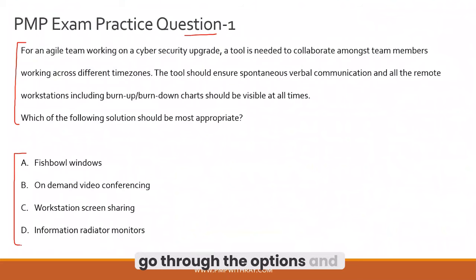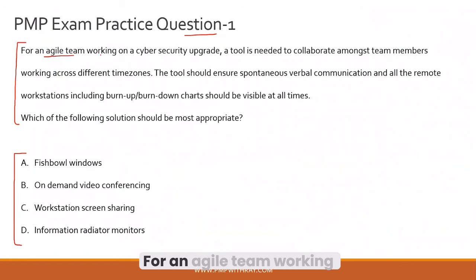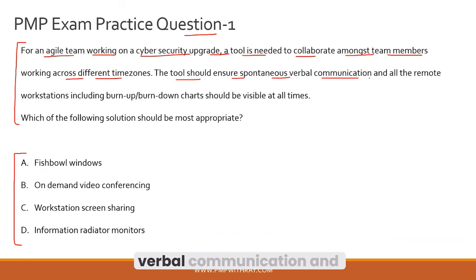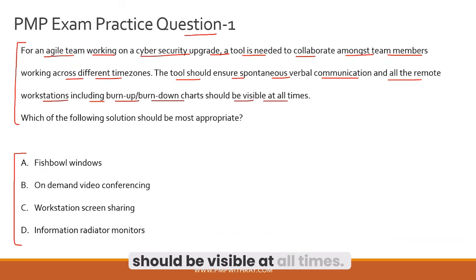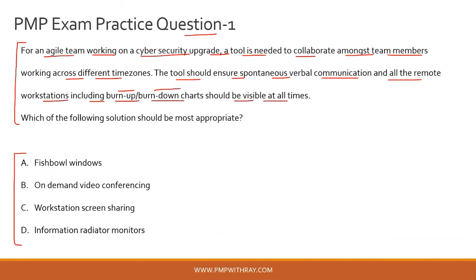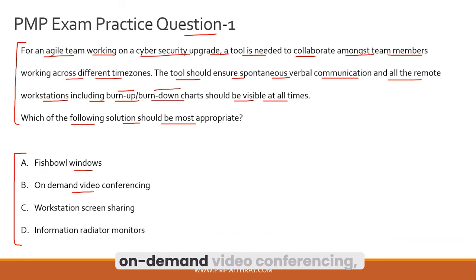Please read the question and try to answer it before we solve it together — you can pause the video here. For an agile team working on a cyber security upgrade, a tool is needed to collaborate amongst team members working across different time zones. The tool should ensure spontaneous verbal communication, and all remote workstations including burn-up charts and burn-down charts should be visible at all times. Which of the following solutions is most appropriate? Options are: fishbowl windows, on-demand video conferencing, workstation screen sharing, and information radiator monitors.